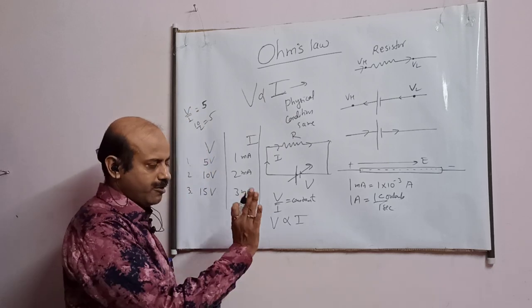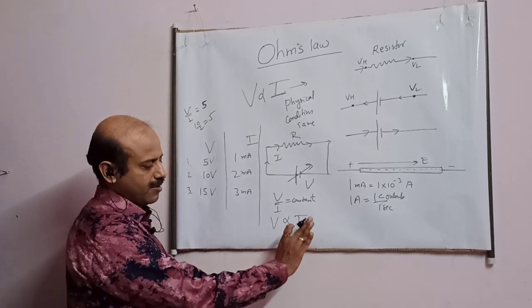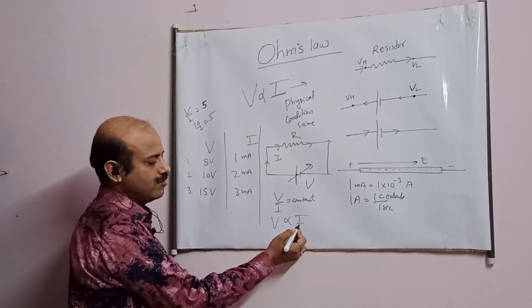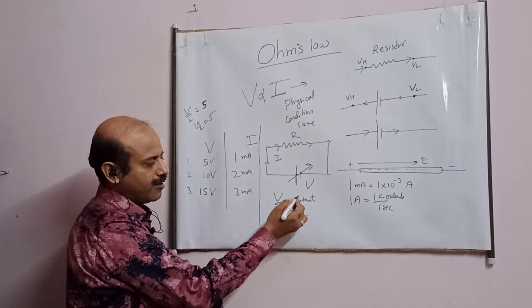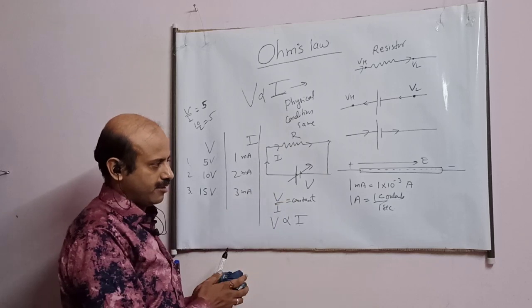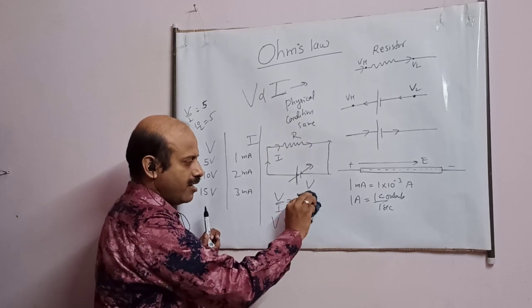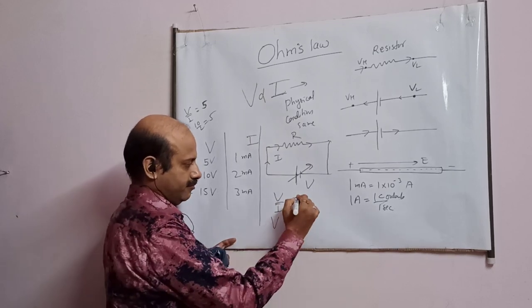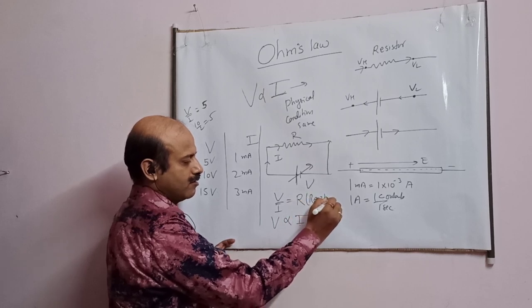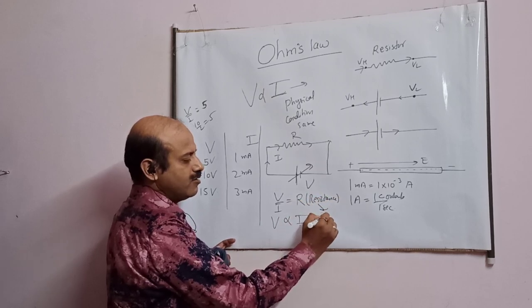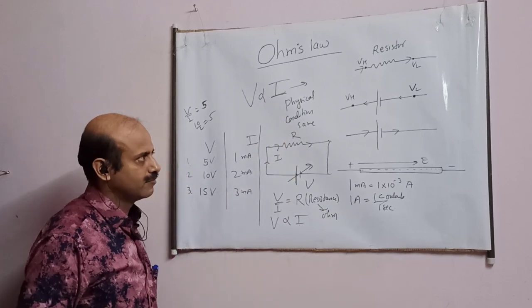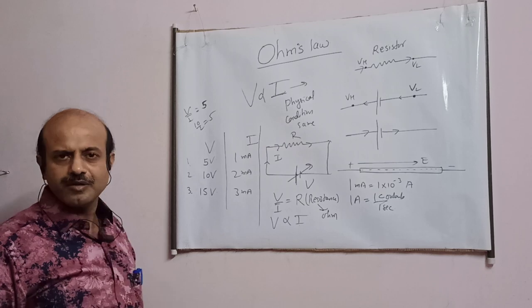Ohm's law simply says this much: that the potential difference across any point of the conductor is proportional to current, which means V upon I is a constant. Now this constant is named R, known as resistance, and its unit is ohm. This is basically what Ohm's law is about.